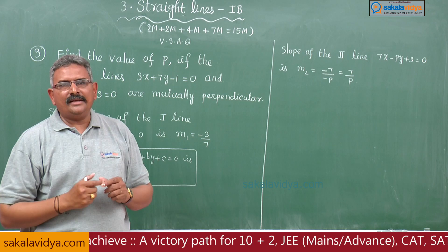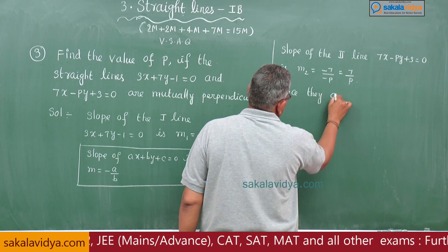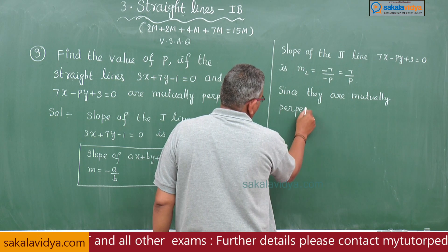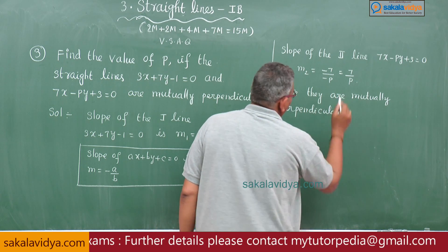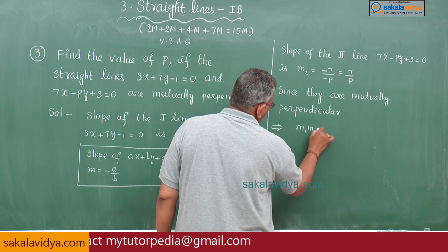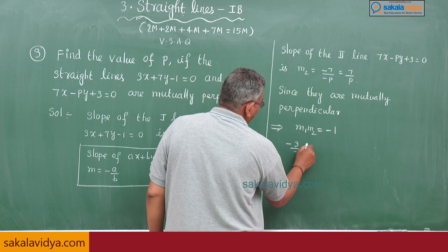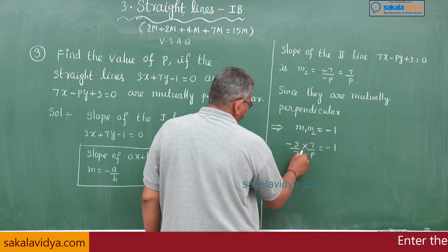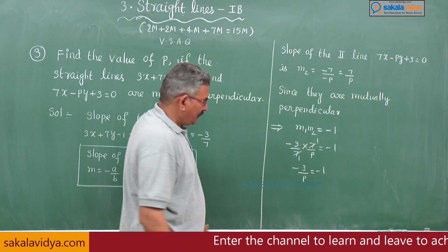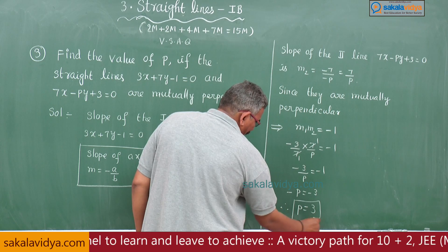Now we establish the relationship between M1 and M2. Since the lines are mutually perpendicular, the condition is M1 × M2 = -1. So (-3/7) × (7/P) = -1. By cross multiplication: -P = -3, and cancelling the negatives, we get P = 3. This is the answer.